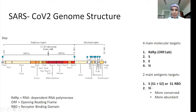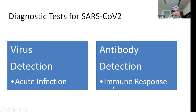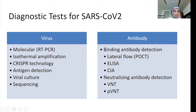The S antibodies are the ones we're hoping for when we get the vaccine, as these are the antibodies that neutralize the virus. Tests for SARS-CoV-2 can be broadly classified into two main groups: virus detection for acute infection, and antibody detection for immune response. The most popular gold standard method is RT-PCR, but there are also isothermal amplification, CRISPR-based strategies, and FDA-approved antigen detection tests, though their sensitivity is not very good. Viral cultures and sequencing are only available in research settings.